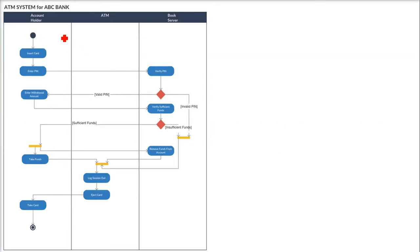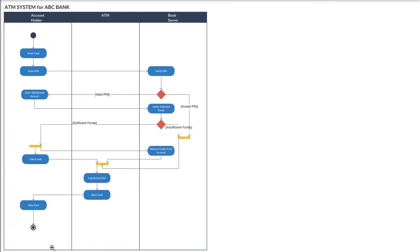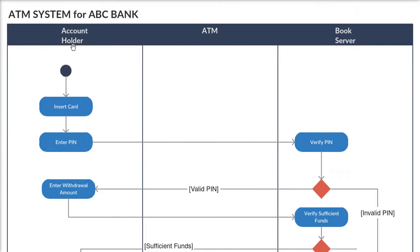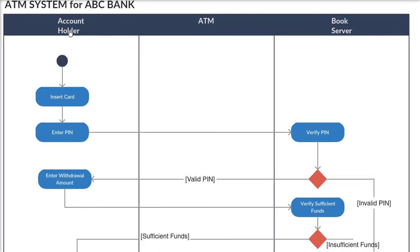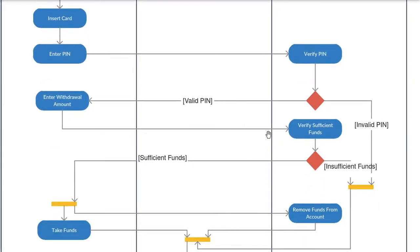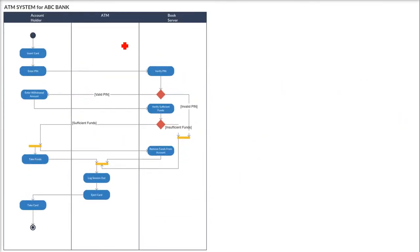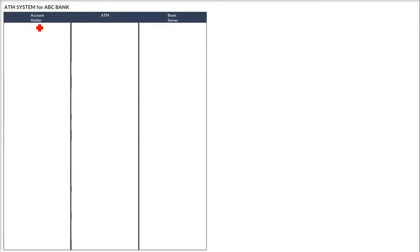Here is an ATM system example for a certain bank — a simple example. There are three swim lanes: the account holder, the ATM machine, and the server or bank server. The account holder's activities are related to the ATM machine and the server. Starting from the initial node, the flow begins with the account holder inserting the card.